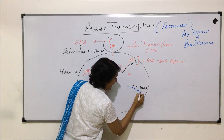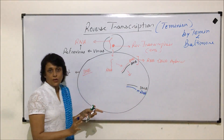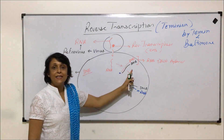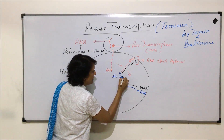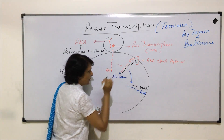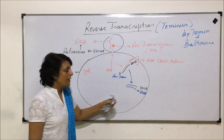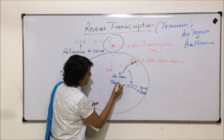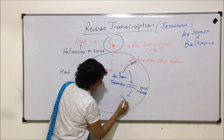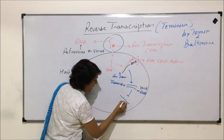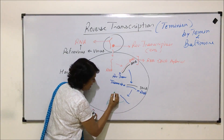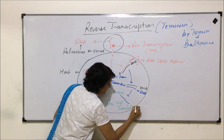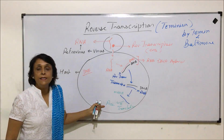The DNA formed from RNA-DNA hybrid separation helps in the formation of mRNA — this step from RNA to DNA is reverse transcription. Then the regular process: this DNA helps in formation of mRNA, which is transcription, and then this mRNA will help in protein synthesis, which is translation.